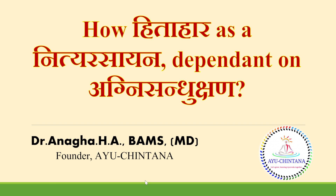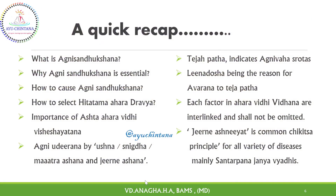Taking a quick recap of the first episode: we covered what is Agni Sandhukshana, why Agni Sandhukshana is essential, how to cause Agni Sandhukshana, and how to select Hita Tama Aharadravya. We understood the importance of Ashta Ahara with Visheshayatana in the first episode. Also, Agni Udhirana is caused by Ushna, Snigdha, Matra Ashana and Jirne Ashana.